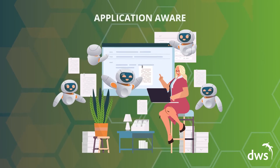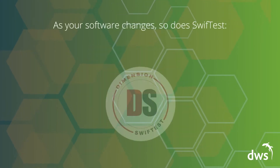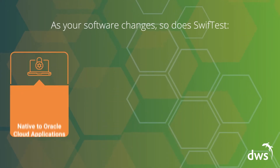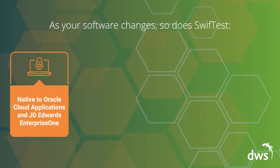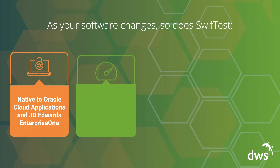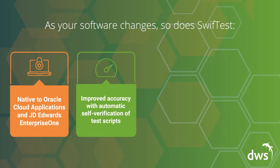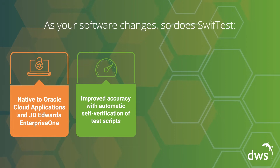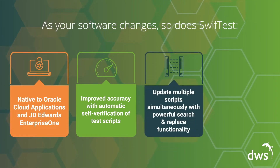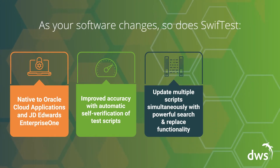Swift Test is also application-aware. In other words, as your software changes, so does Swift Test. It's native to Oracle Cloud Applications and JD Edwards Enterprise One. It offers improved accuracy with automatic self-verification of test scripts. You can update multiple scripts simultaneously with powerful search and replace functionality.